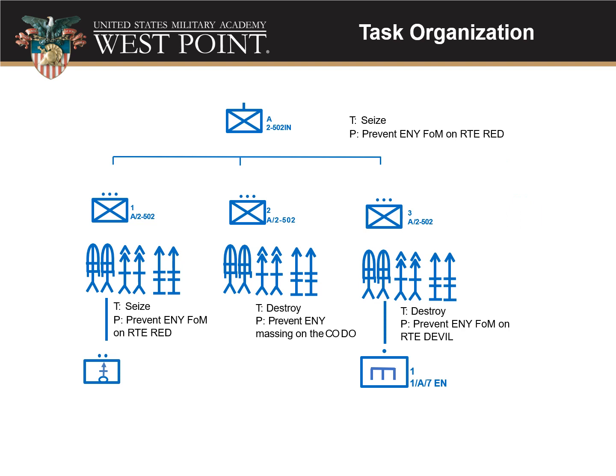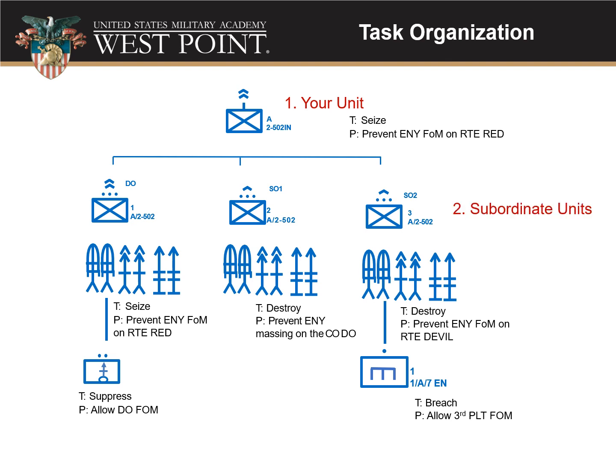The last thing we need to do is put in the tasks and purpose for each subordinate element. That way, soldiers will know right at the start of the op order what their task and purpose is as they listen to the rest of the order. It can be helpful to give a task and purpose to your attached elements also, so everyone understands why they're there and how they're being used. You can also use icons to show which units are the decisive operation and who is your supporting operation. To recap: you need to have your unit at the top, your subordinate units, your key weapon systems, any attachments, and your tasks and purposes.